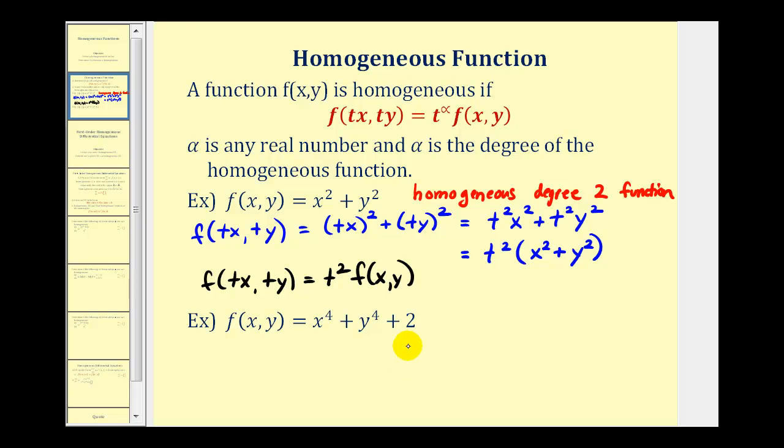Let's try another example. Again, the first step is to determine the function f(tx,ty). So now we'll substitute tx for x, so we'll have (tx)⁴ plus substituting ty for y, (ty)⁴ plus 2. This is going to equal t⁴x⁴ plus t⁴y⁴ plus 2.